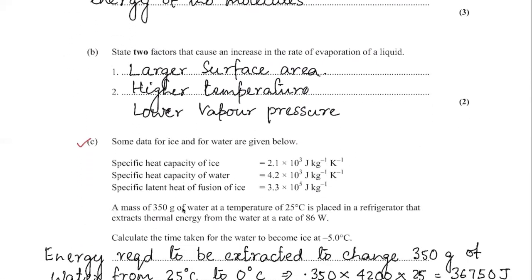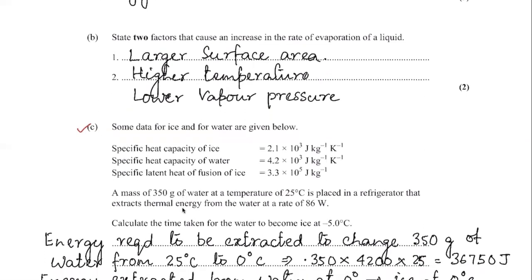State two factors that cause an increase in the rate of evaporation. First, larger surface area — if the surface area is greater, evaporation will be more. Second, higher temperature increases the rate of evaporation. You could also mention lower vapor pressure: if the vapor pressure is low, the rate of evaporation will be higher.